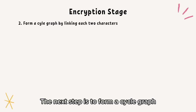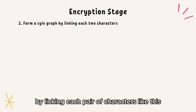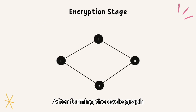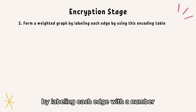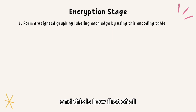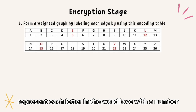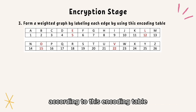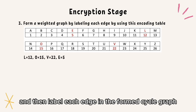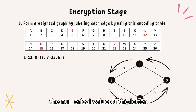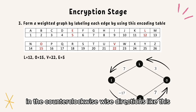For the next step, we form a cycle graph by linking each pair of characters like this. Then, after forming a cycle graph, we need to create a weighted graph by labeling each edge with a number. First, represent each letter in the word 'love' with a number according to the encoding table. So we have L is 12, O is 15, V is 22, and E is 5. Then label each edge in the cycle graph by calculating the difference between the numerical values of the letters in the counterclockwise direction, like this.